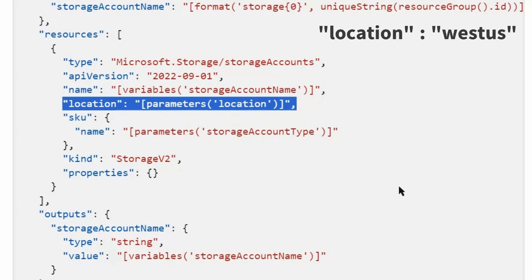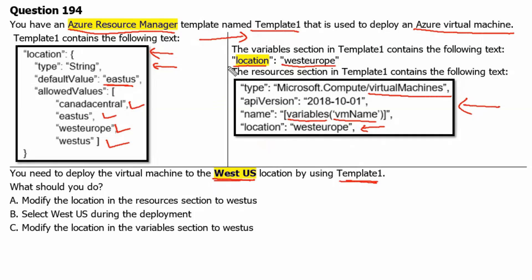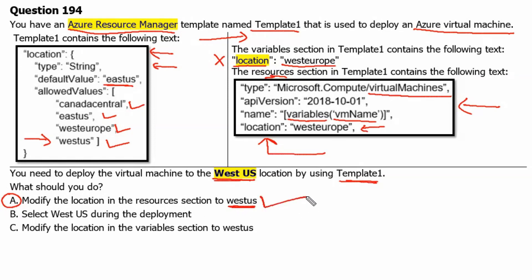Now we understand the structure of the template. Let's go back to the question. Therefore, we can simply update the location value to West US in the resources section. The variable location information will not impact this virtual machine, and West US is an acceptable allowed value in the parameter as well. Hence, option A — modify the location in the resources section to West US — is the correct answer.